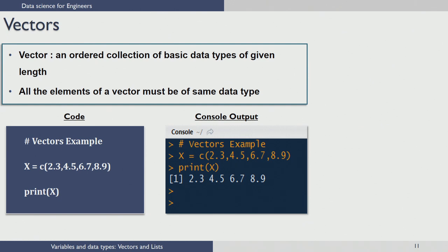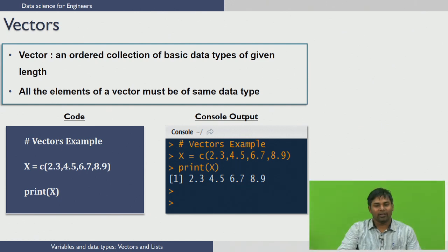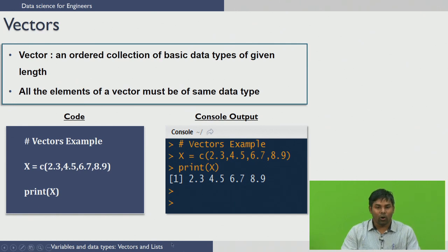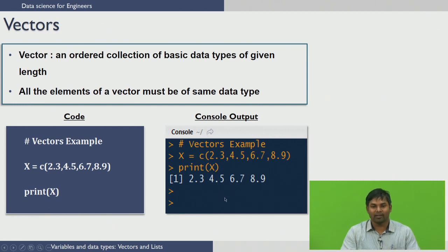To create a vector in R, you use the concatenation command c(). For example, to define a vector containing 4 numeric variables, you write x = c(2.3, 4.5, 6.7, 8.9) and then print x. When you execute this code, the output in the console shows the vector x with values 2.3, 4.5, 6.7, and 8.9.